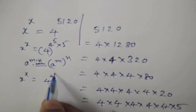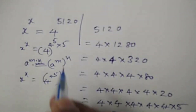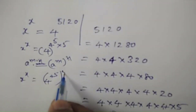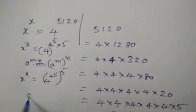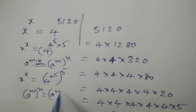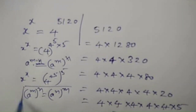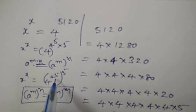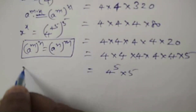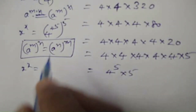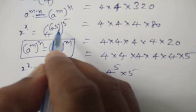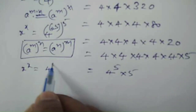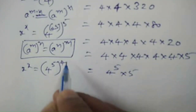Now, 4 to the power of 5 — here m to the power of n, where n is 5. We have one more formula: a power m whole power n is equal to a power n whole power m. We can interchange the powers like this — m will go in place of n and n will go in place of m. By applying this, it will become x to the power of x is equal to 4 to the power of 5, whole power 5.